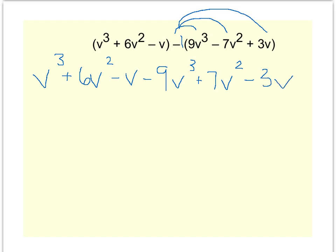So now when I combine my like terms, I'll start with this v³. Remember, there's really a one there. I've got a negative 9v³. Well, one minus nine is negative eight, so I have negative 8v³.